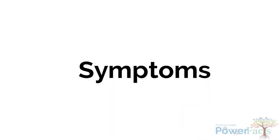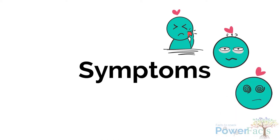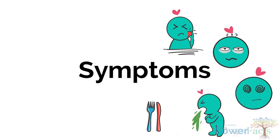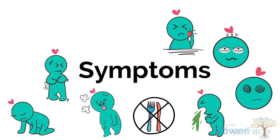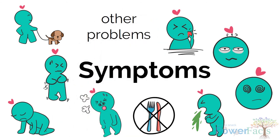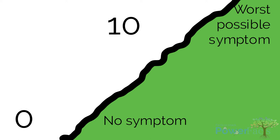The 10 items are: Pain, Tiredness, Drowsiness, Nausea, Lack of appetite, Shortness of breath, Depression, Anxiety, Wellbeing, and any other possible problems such as constipation. These questions are asked on a scale of 0 to 10, where 0 is no symptom and 10 is the worst possible symptom.